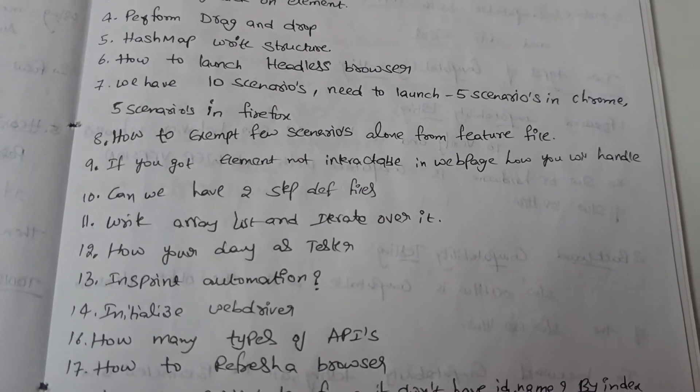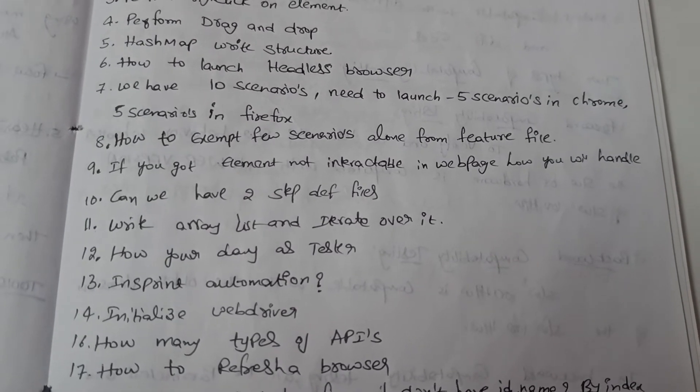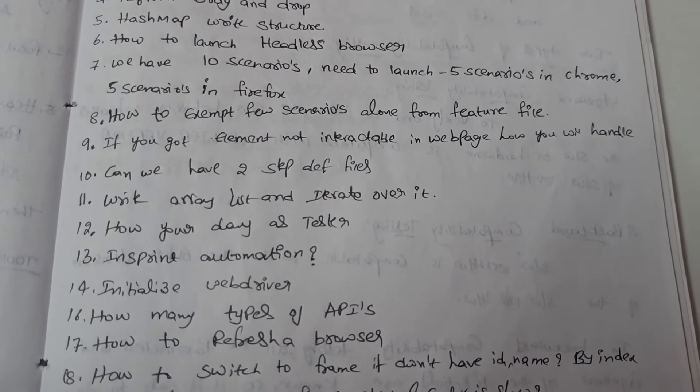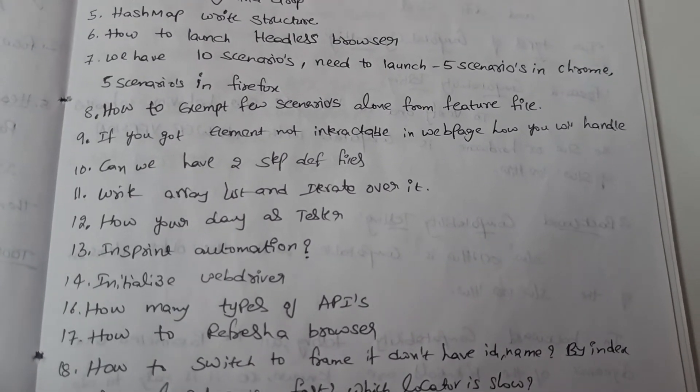10th question: can we have two step definition files? 11th question: write an array list and iterate over it. So we have to write an array list and we have to write the iterator for that also.